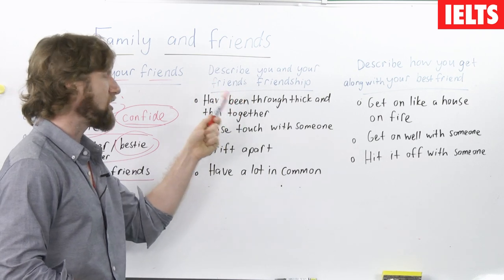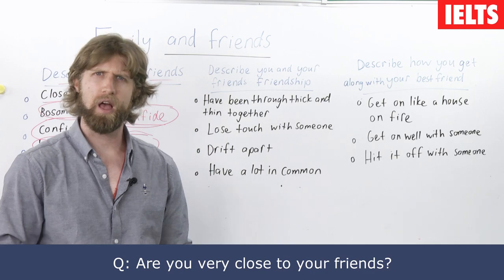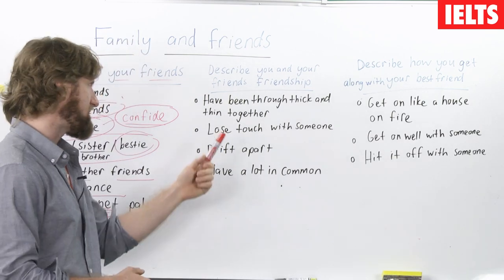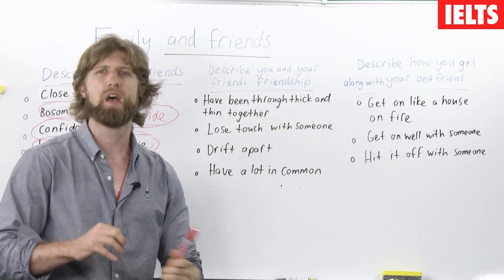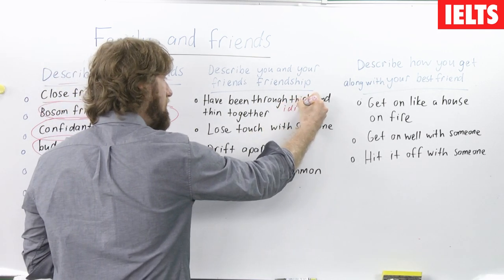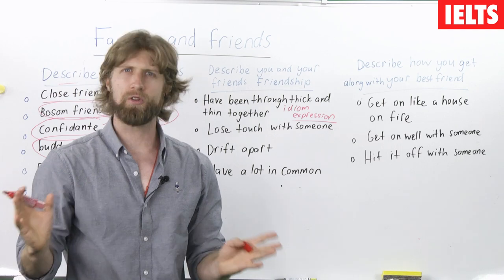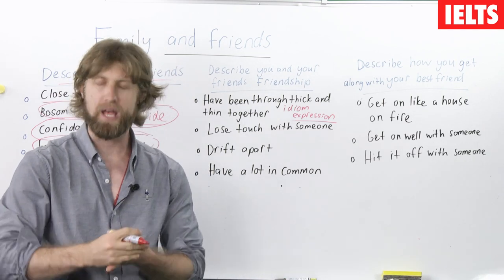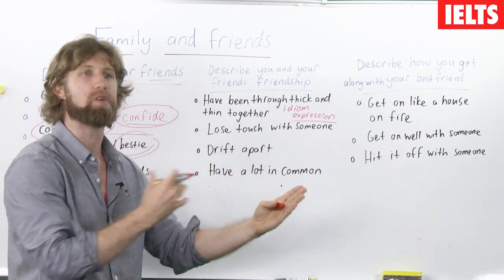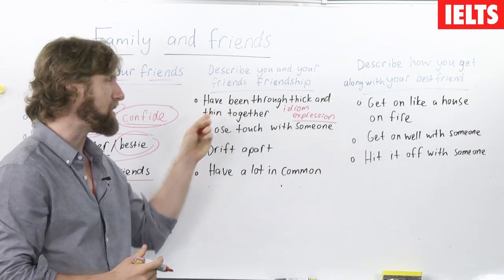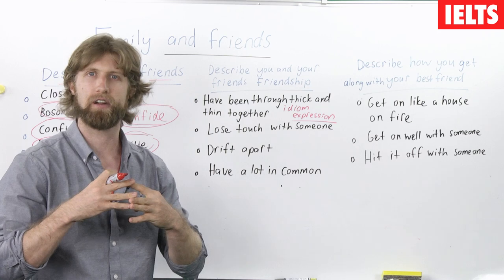These are words to describe you and your friend's friendship. If somebody asks you how close you are to your friends and what you can or cannot do with them, you can say: me and my close friends, we have been through thick and thin together. That is an idiom meaning that many difficult things have happened — you lost your job, your money, you and your wife split up — and your friend helped you through all of that, and you helped him with his problems. We have been through thick and thin together means the good times and the bad times, always helping and supporting each other.